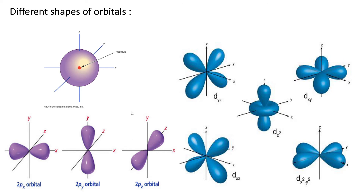There is no 1px, 1py, or 1pz because in the first shell we have only an S orbital. Coming to the d orbitals — the P orbital is double-lobed, and the d orbitals are double-double shaped. They are oriented along the axes: dyz, dxy, dxz, dx²−y², and dz². So in total we have 5 d orbitals, 3 p orbitals, and 1 s orbital.